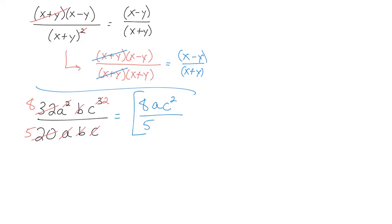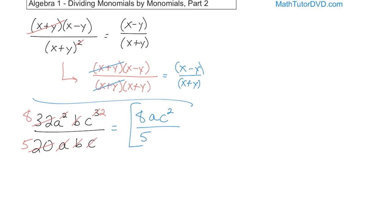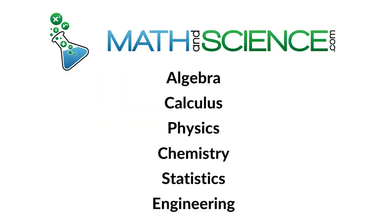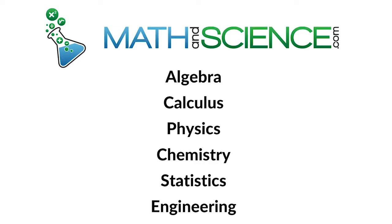That's the final answer: 8ac² over 5. Dividing monomials by monomials — learning how to cancel things in algebra — is really important. The problems will get more complicated as we go on, so make sure you understand this. Follow me on to the next lesson to continue learning division skills in algebra at mathandscience.com.